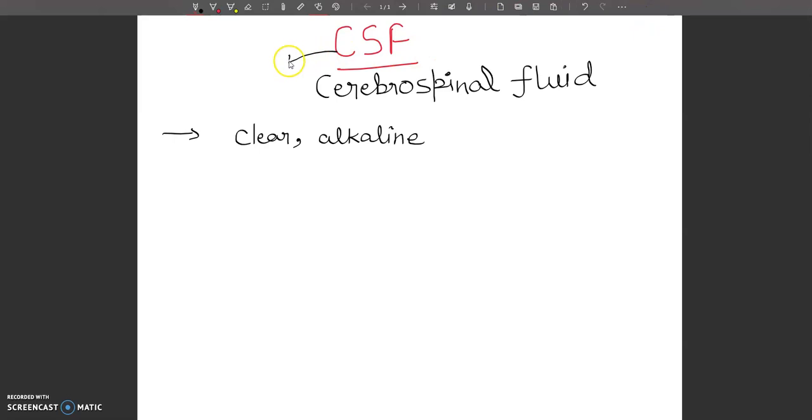The cerebrospinal fluid location is very important to know. You can see the space between the arachnoid and pia mater. In the last video I told you that our meninges are three layers: dura mater, arachnoid, and pia mater. The space between arachnoid and pia mater is filled with fluid, which is known as cerebrospinal fluid.